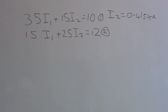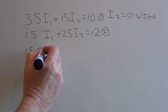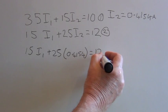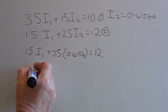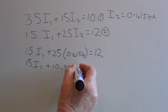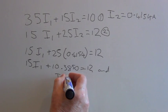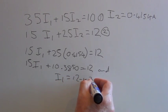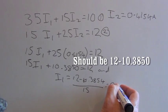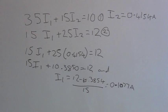So if I now plug that value into equation 2, this gives 15 I1 plus 25 times 0.4154 equals 12. So I have 15 I1 plus 10.385 equals 12, and I1 equals 12 minus 10.385 divided by 15, which equals 0.1077 amps. So I now have my value for I1 and I2.